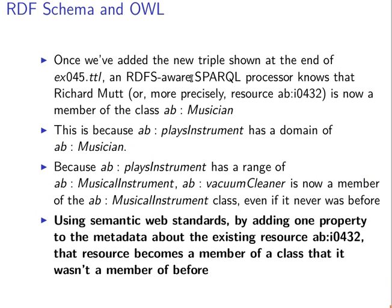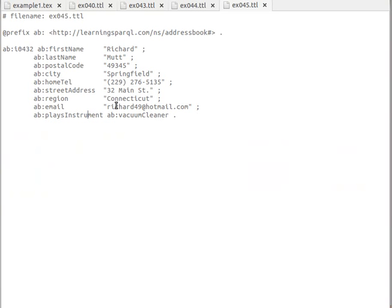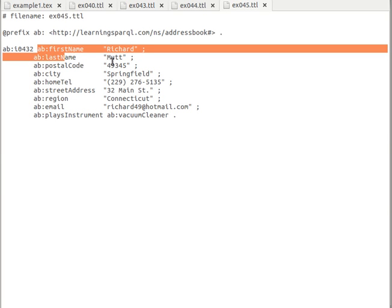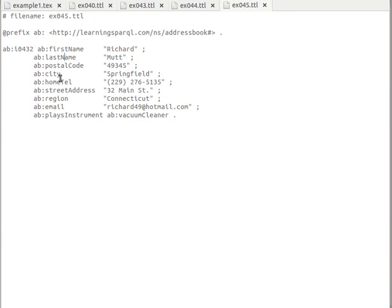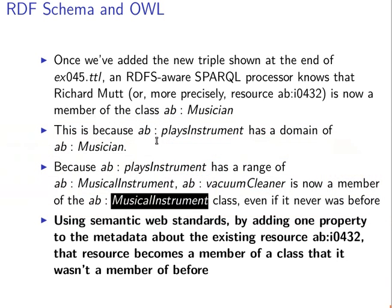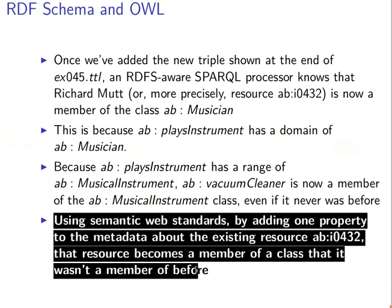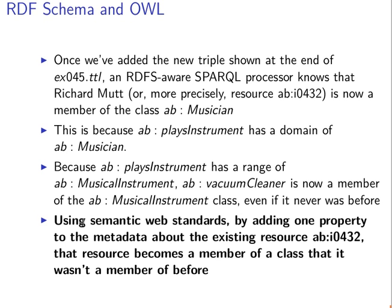Any RDFS-aware software or SPARQL processor knows that Richard Mutt — which is this individual here, the one we're describing with first name and last name and the rest of the information — it will automatically know that this individual is now a member of class Musician, and it will automatically know that vacuum cleaner is a member of class Musical Instrument, although we did not explicitly say that in our data. This is the power of this stuff.